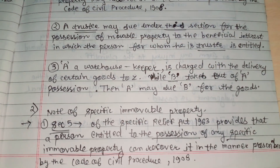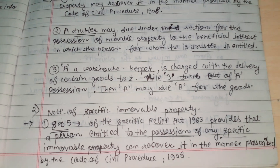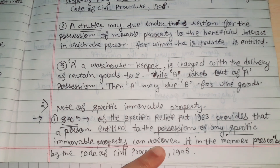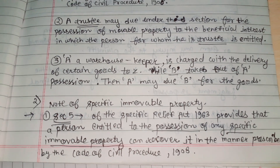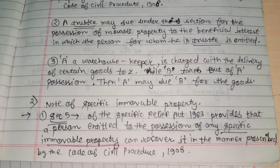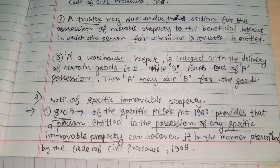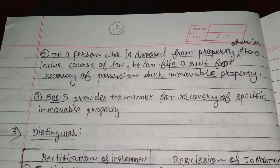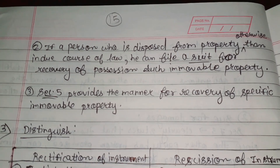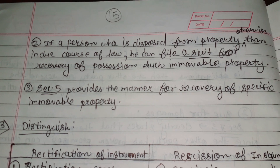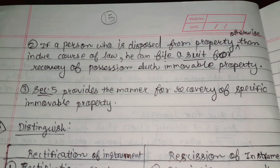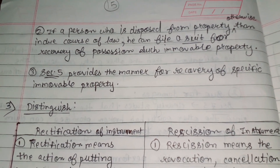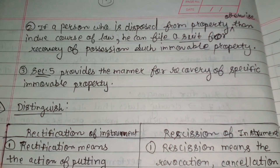Next is specific immovable property. Section 5 of the Specific Relief Act 1963 provides that a person entitled to the possession of any specific immovable property can recover it in the manner prescribed by the Code of Civil Procedure 1908. If a person is dispossessed from the property otherwise than in due course of law, then he can file a suit for the recovery of possession of such immovable property. Section 5 provides the manner for the recovery of a specific immovable property.